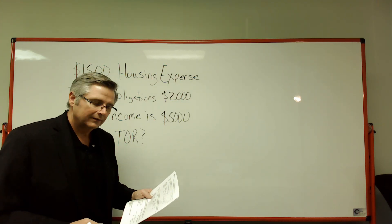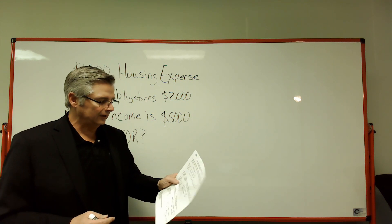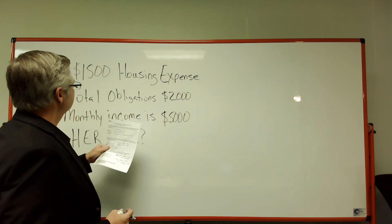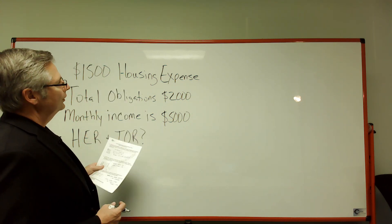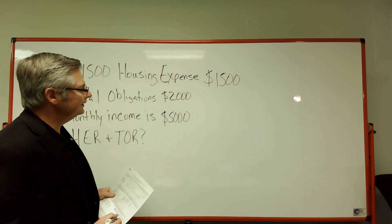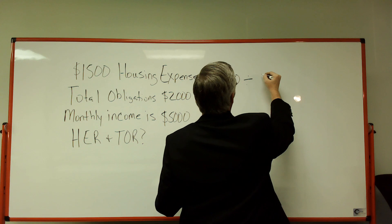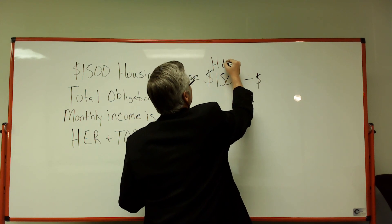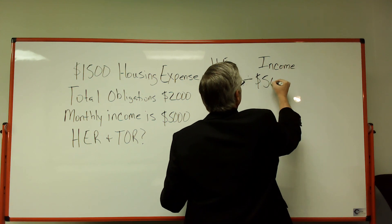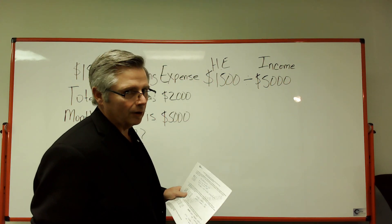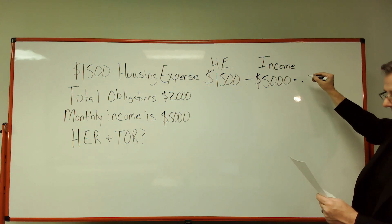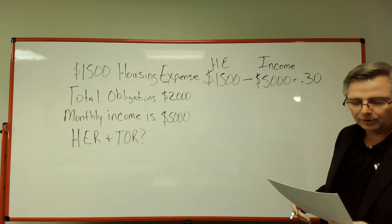If you look at the answers on the test, it shows HE and TO ratios. For the housing expense ratio, we take the housing expense of $1,500 and divide it by the gross income of $5,000. So $1,500 divided by $5,000 gives us 0.30.